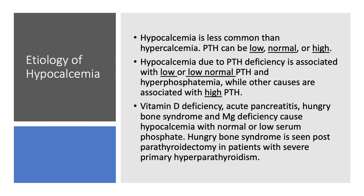In that case, phosphorus will be high because PTH is phosphaturic — when it is low, phosphorus is not going to be excreted efficiently. PTH is high in all other causes, meaning anything other than PTH deficiency is going to cause high PTH.